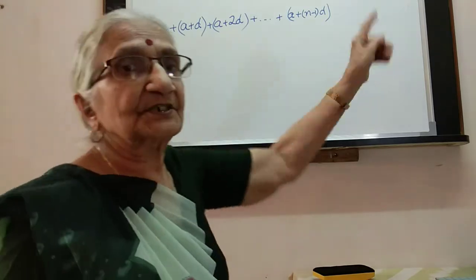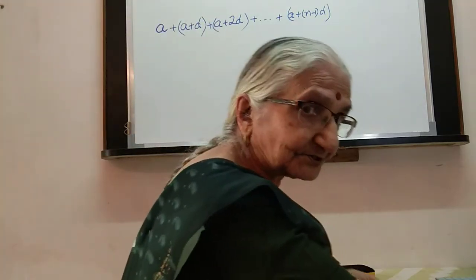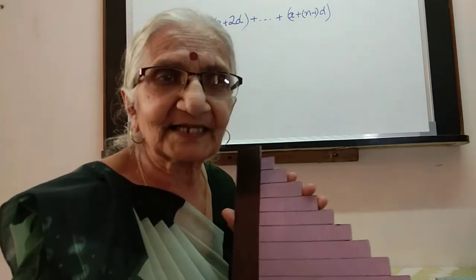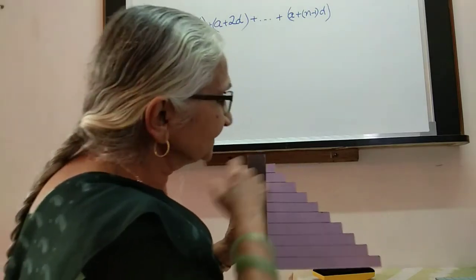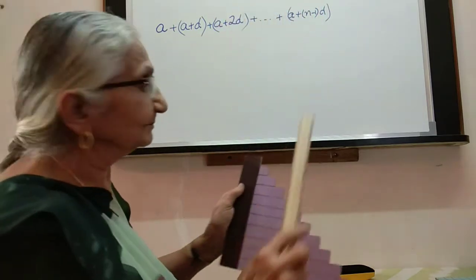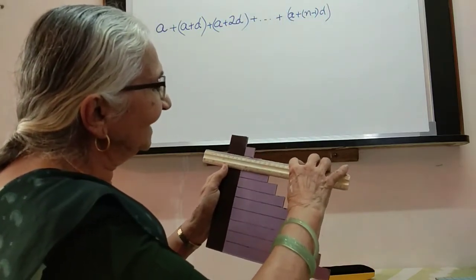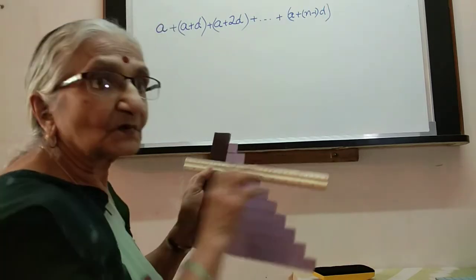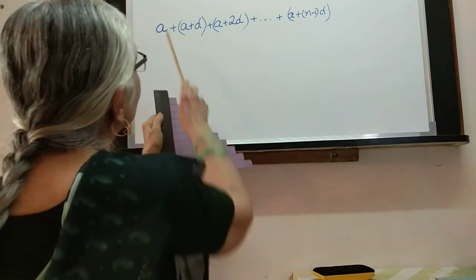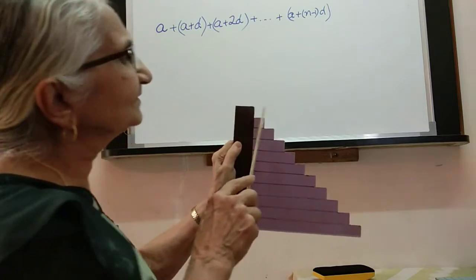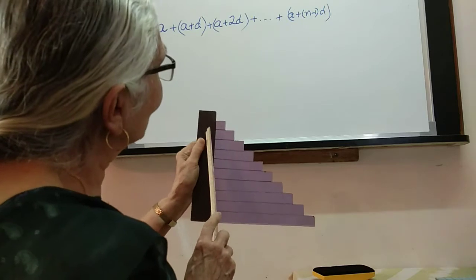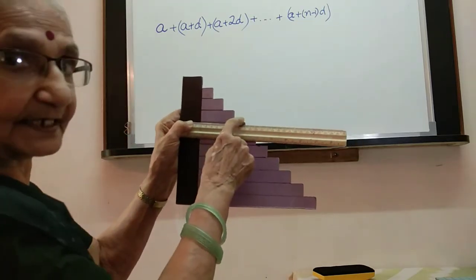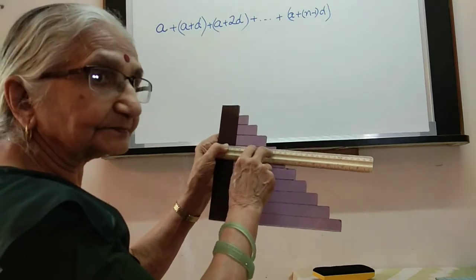We want to find the sum of these n terms by means of a model, and you will immediately find it is similar to something we have done before. In the model, all terms contain 'a' — the first term is 'a', second is 'a', third is 'a', everywhere. Then the d-part increases: a plus 1d, a plus 2d, a plus 3d, a plus 4d, a plus 5d.